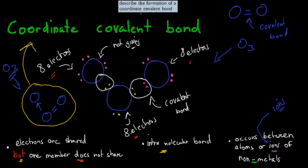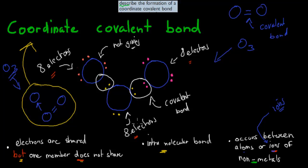To describe the formation of a coordinate covalent bond: you have two atoms coming together with that third atom. One atom shares electrons with another just like usual, forming a regular covalent bond. Whereas the third atom receives two electrons but doesn't share anything back — and that's what makes it a coordinate covalent bond. This happens to make sure every one of those atoms has eight electrons; otherwise someone might end up with ten, which would defeat the purpose. In this case they all have eight electrons, they're all happy, and we have ozone being formed.